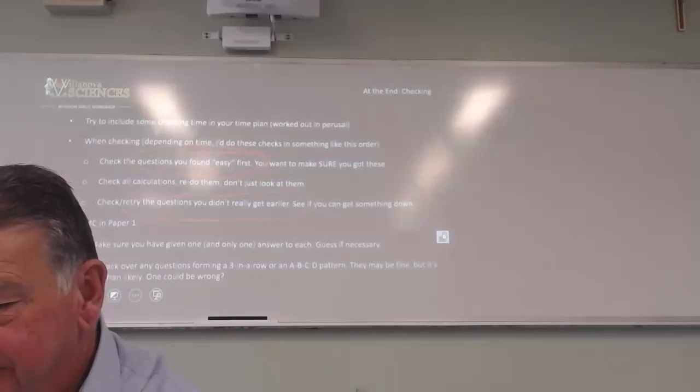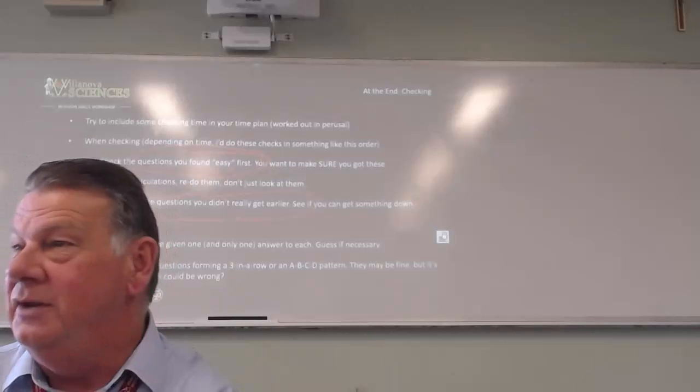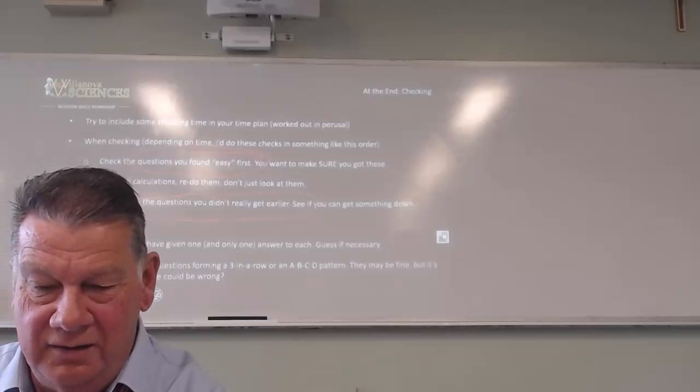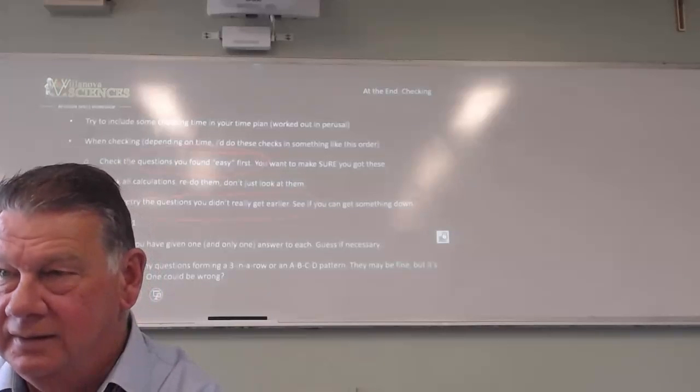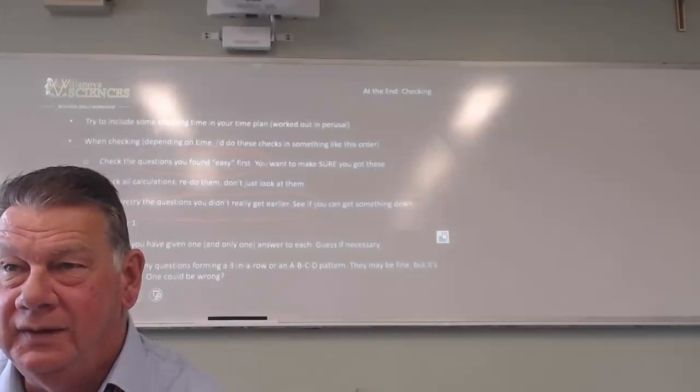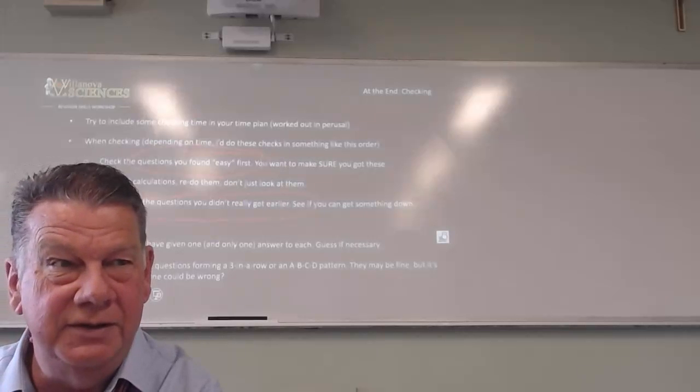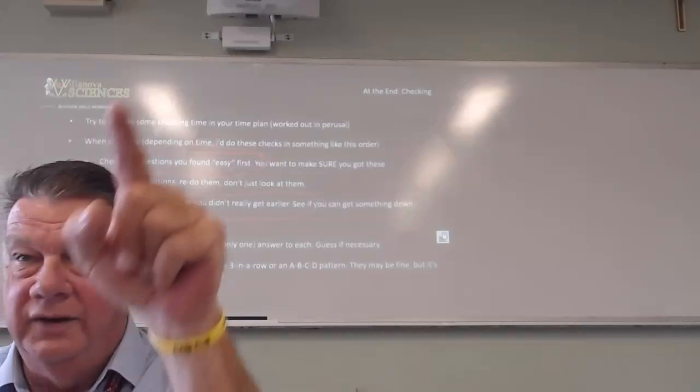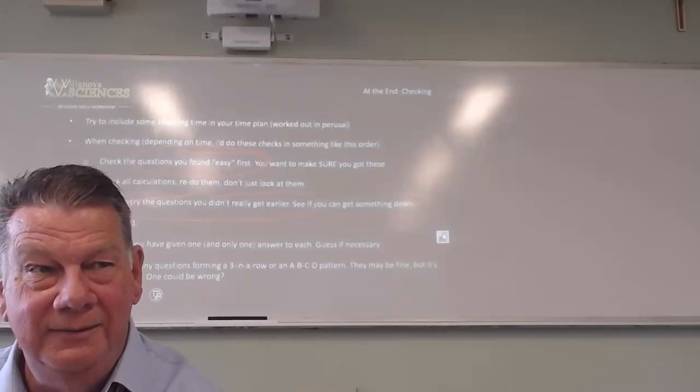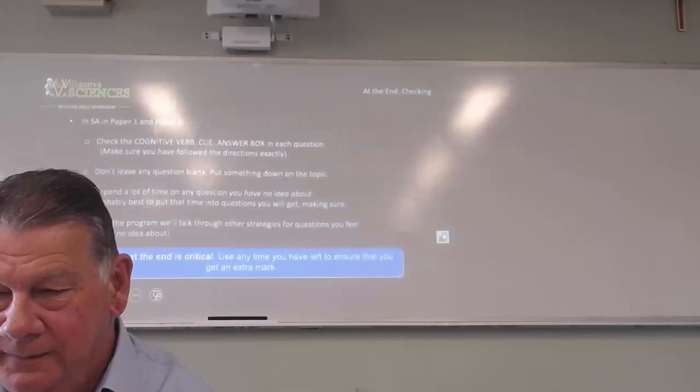In the multiple choice, the last thing I would do, is take the ruler, and go down, and just make sure, across each line, that I've only got one answer, but I have got an answer for each one. And then, if I've got any time, and this is relying on the QCAA being competent, I would look at my multiple choice and say, there's five C's in a row. It's unlikely that they're going to have five C's in a row. So, it doesn't mean any of them are wrong. It just means, I'd look at those five questions and see, have I misread something? Or, if it goes A, B, C, D, D, C, B, A, A, B, C, D, or something like that. But, given this QCAA, it could happen. The questions should be randomised, but they may not be.